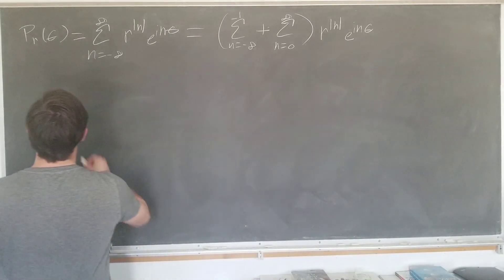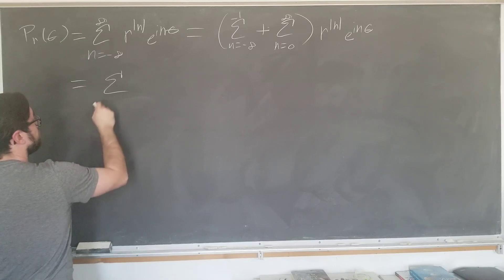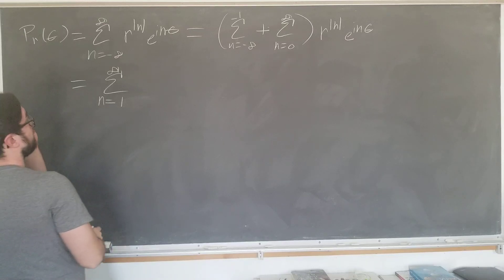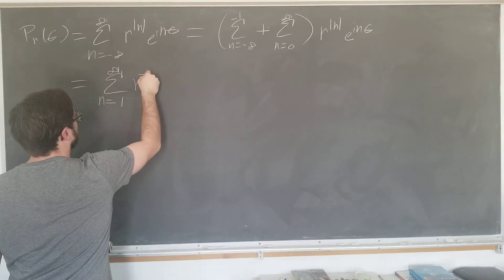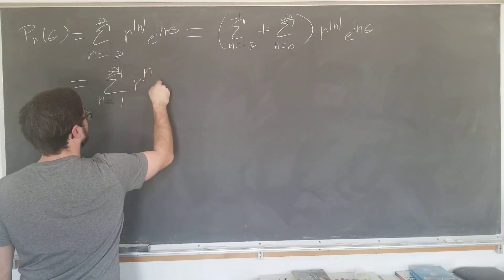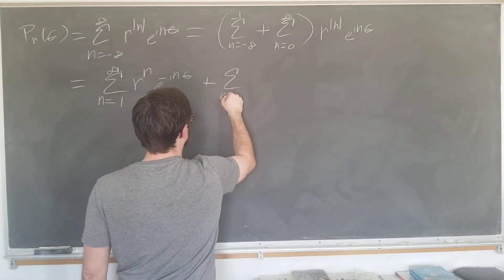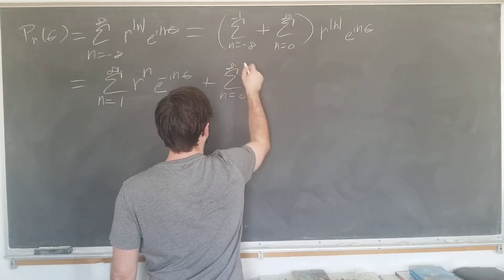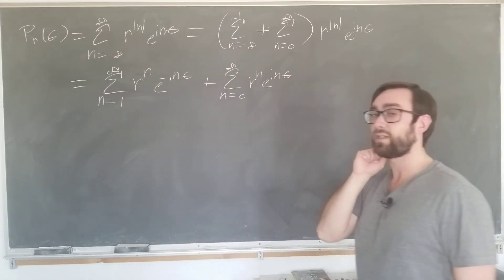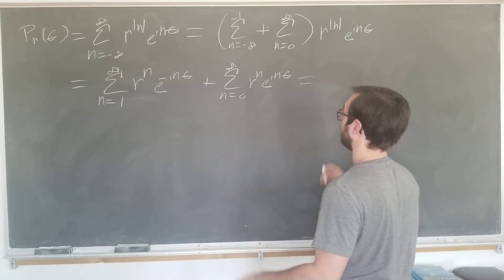So now we have the first sum as n goes from 1 to infinity. Now we're gonna have r to the n e to the minus i n theta. The whole point of the absolute values is to get rid of the minus signs. There's another sum as n goes from 0 to infinity of r to the n, e to the i n theta. And you might notice that we can write this as a geometric series, two series actually.